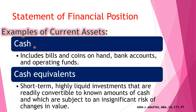The first example of current assets is cash. Cash is considered a current asset because it can be readily converted within one year and used to pay short-term obligations. Cash includes bills and coins in hand, bank accounts, and operating funds. For example, bills and coins inside a restaurant's cash register are included in the company's cash account. Cash deposited in banks under the company's name is also classified as cash unless it is restricted. Operating and working funds are also classified as cash.